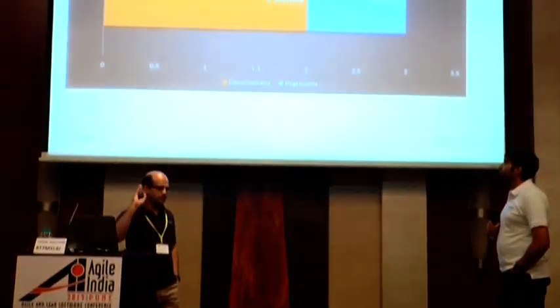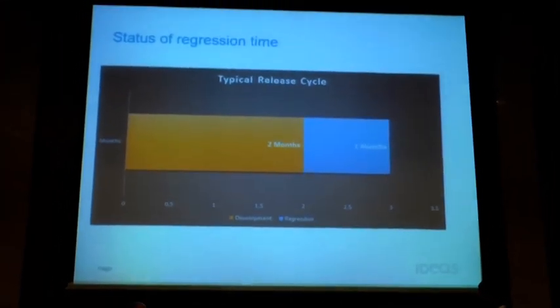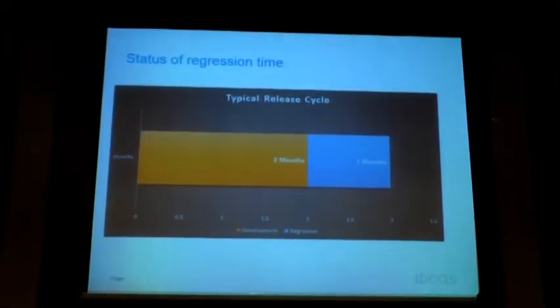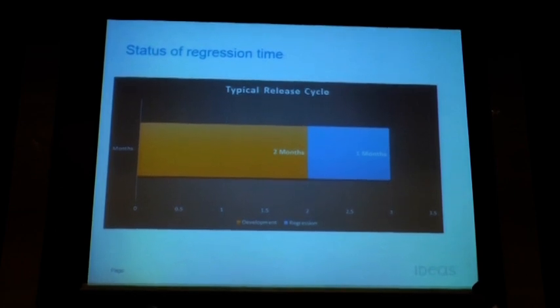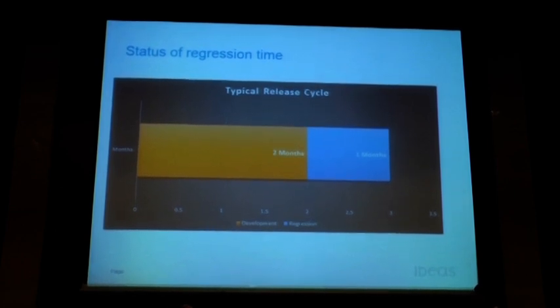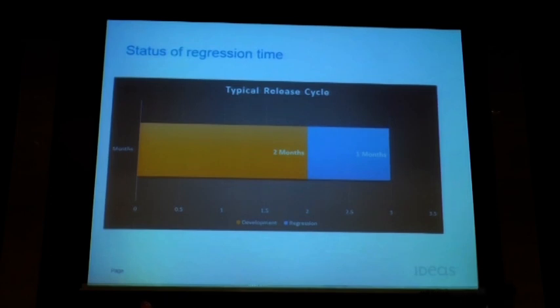Where were we, if I look back into the history — three years back — this is how we were delivering to our clients. Typically we used to release every quarter, which means every three months we would give a major deployment to production. This is how our release cycle typically looked like: the first couple of months we used to develop new features.